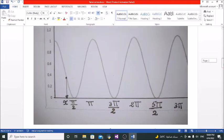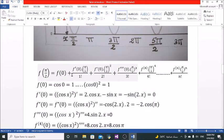f of 0 equals 1, but this is cosine squared, cosine squared 0 equals also 1, cosine 1 squared.